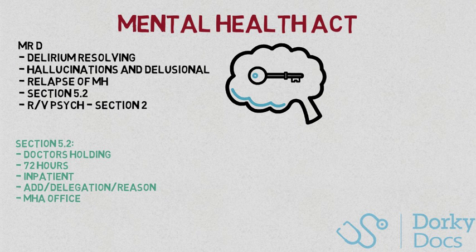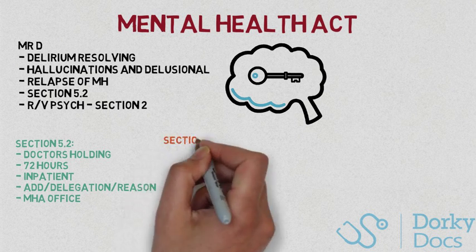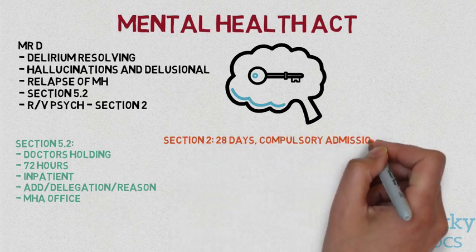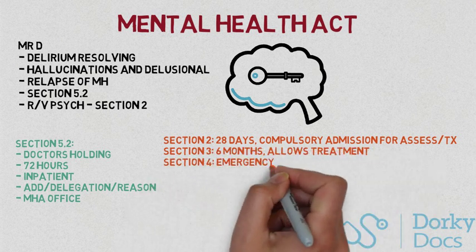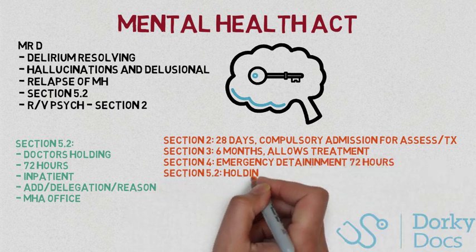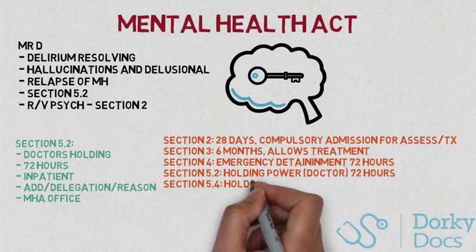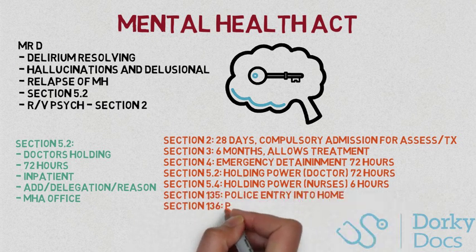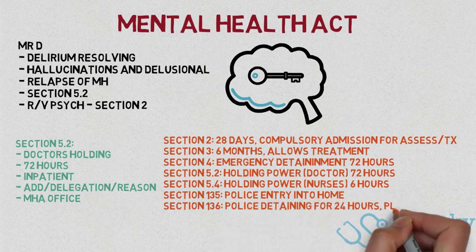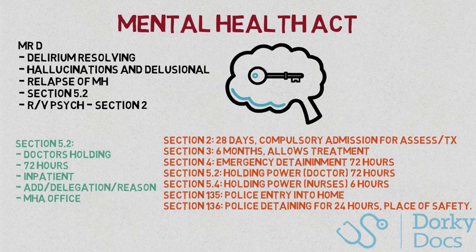There are a number of sections you need to be familiar with, but Section 5.2 is probably the most important for most doctors. Section 2 lasts for 28 days and allows compulsory admission for assessment and/or treatment. Section 3 lasts for 6 months and allows for treatment. Section 4 is the Emergency Department's holding power for 72 hours for assessment. Section 5.2 is the inpatient doctor's holding power for 72 hours. Section 5.4 is the holding power for nurses in an inpatient setting for 6 hours. Section 135 allows the police to force entry into one's home, and Section 136 allows a police officer to detain a patient for up to 24 hours and bring them to a place of safety — commonly seen in A&E as Section 136 suites.